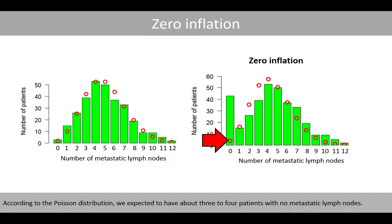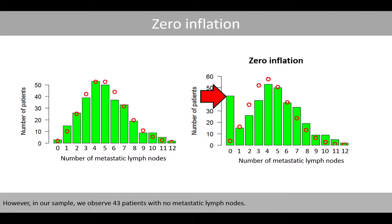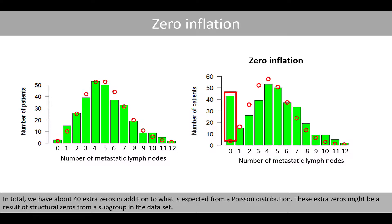According to the Poisson distribution, we expect to have about 3 to 4 patients with no metastatic lymph nodes. However, in our sample, we observe 43 patients with no metastatic lymph nodes. In total, we have about 40 extra zeros in addition to what is expected from a Poisson distribution. These extra zeros might be a result of structural zeros from a subgroup in the dataset.